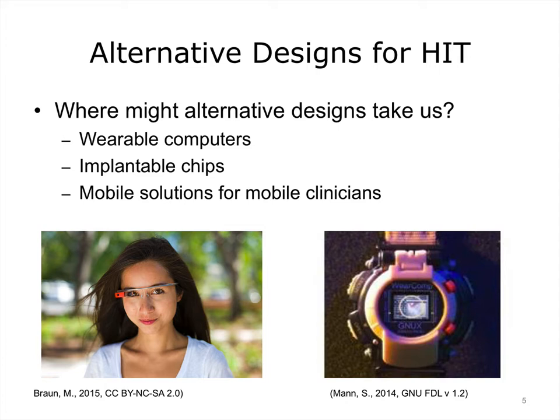Moving away from wearable computers and into architecturally embedded monitoring technologies — sometimes referred to as smart homes — can we help older patients stay in the home longer by monitoring things like whether the stove has been left on, alterations in walking patterns, tracking if the refrigerator is being opened and closed as a proxy for eating behaviors, and if an early-stage dementia patient has started wandering outside of the home? Of course, the other side of the coin is that many people have serious concerns about invasion of privacy. This sort of monitoring would require informed consent by the patient.